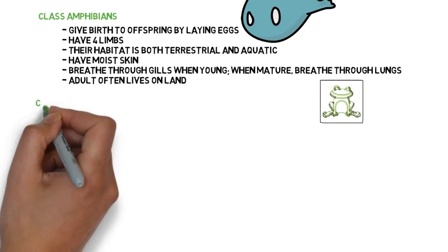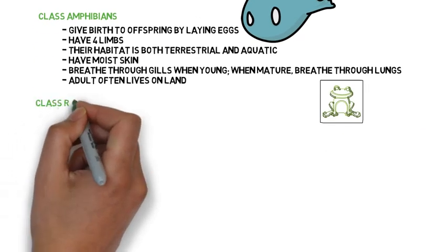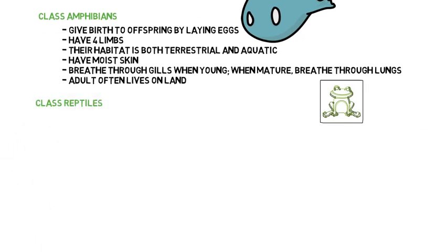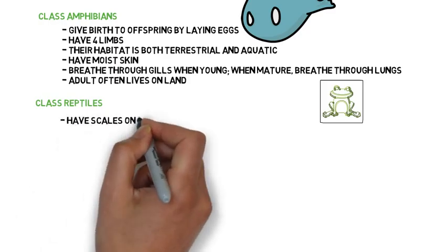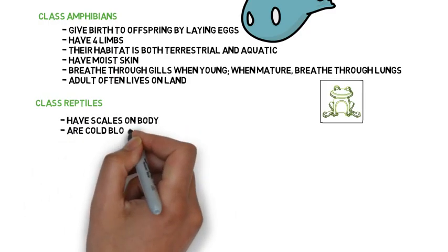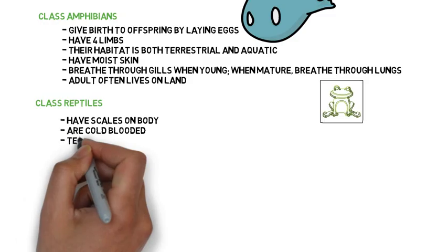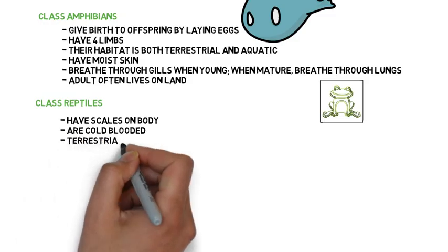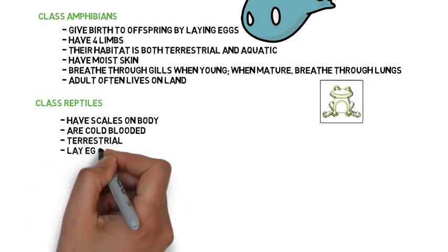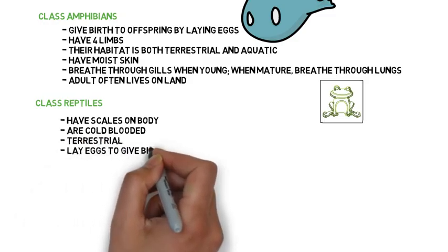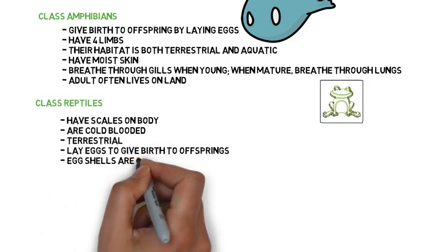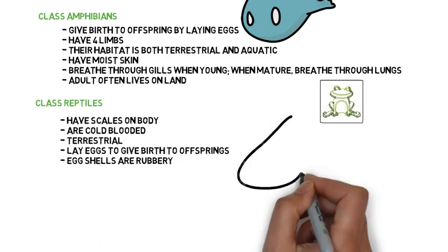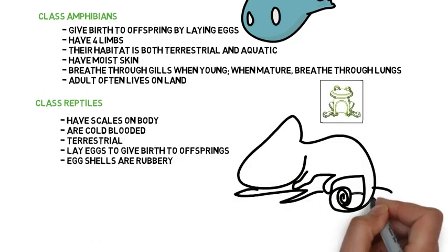Class Reptile. They have scales on their body. They are cold-blooded and terrestrial. They lay eggs to give birth to their offspring, and their eggshells are rubbery. Examples of reptiles are lizard and snake.